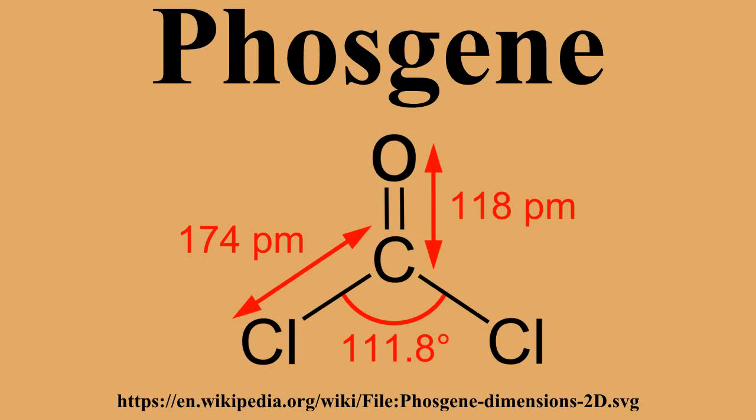Phosgene is the chemical compound with the formula COCl2. This colorless gas gained infamy as a chemical weapon during World War I, where it was responsible for about 85% of the 100,000 deaths caused by chemical weapons.